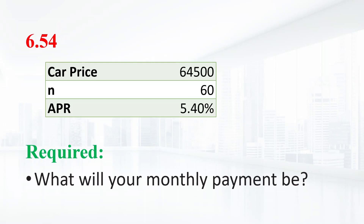You want to buy a new sports car from Musical Motors for $64,500. The contract is in the form of a 60-month annuity due at an APR of 5.4%. What will your monthly payments be?